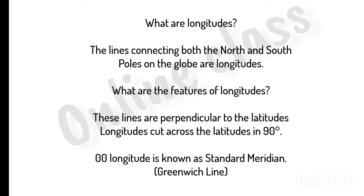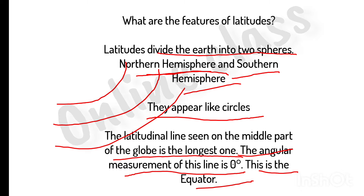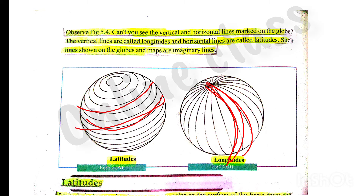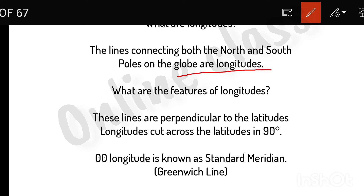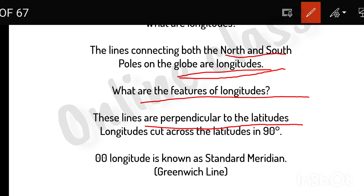Here we are going to show what are longitudes and all the features of longitudes. The lines connecting both north and south poles on the globe are called longitudes. These lines are perpendicular to the latitudes. Longitudes cut across the latitudes at 90 degrees.